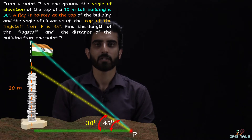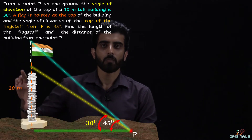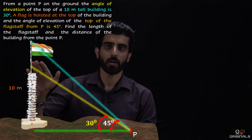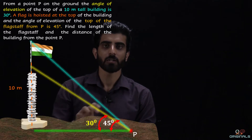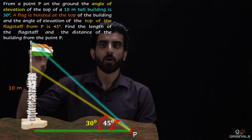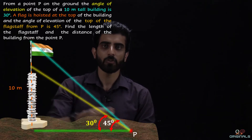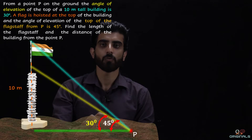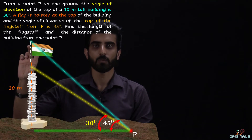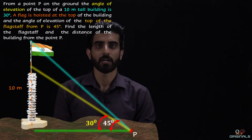Question का overview: एक 10 meter की building है, ground level पे एक point P है जहाँ से angle of elevation building के top तक 30 degree है। उसी building पे एक flag host किया गया है और same point P से flag के top तक angle of elevation 45 degree है। हमें flag staff का length और building का distance point P से find out करना है।